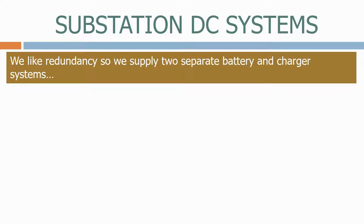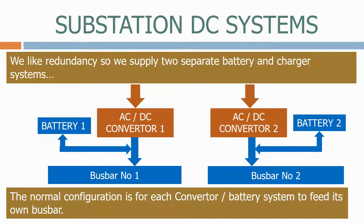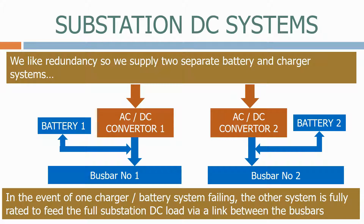We like redundancy, so we supply two separate battery and charger systems. These feed their own busbar and loads. The normal configuration is for each converter battery system to feed its own busbar. In the event of one charger or battery system failing, the other system is fully rated to feed the full substation DC load via the link between the busbars.